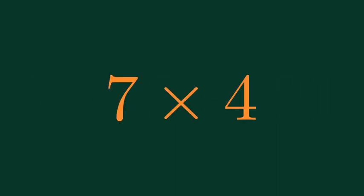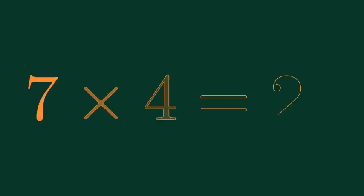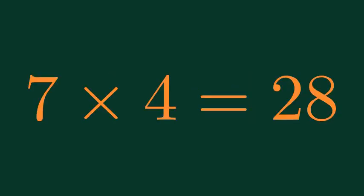What is 7 times 4? 7 times 4 is equal to 28.